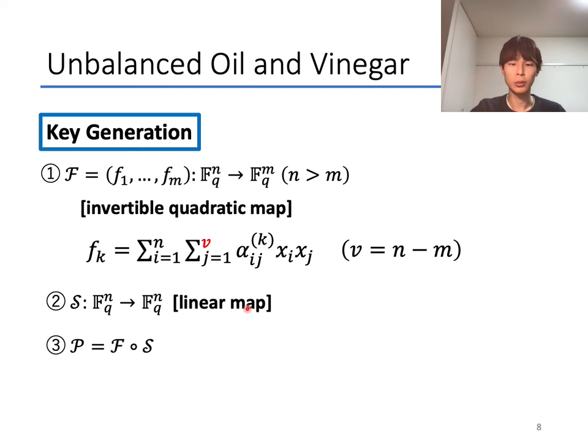Here, we briefly explain the key generation step of UOV. First, we generate an easily invertible quadratic map F, such that each polynomial f_k is designed to be this form where at least one variable of each quadratic term is from x_1 to x_v. Then, here, v is equal to n minus m. Second, randomly choose an invertible linear map S in order to hide the structure of F. Finally, the quadratic map P is given by composing F and S.